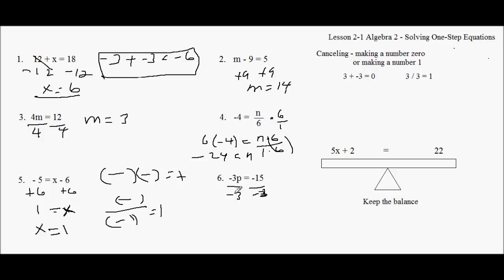So this becomes positive P equals 2 negatives, make a positive. 3 goes into 15 5 times. And that's it. That's the lesson. So, have fun. Bye.